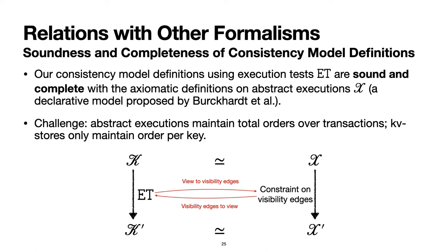The notion of equivalence between k' and x' means they contain the same information. Given the single-step equivalence, we can easily lift this into an equivalence relation between traces.